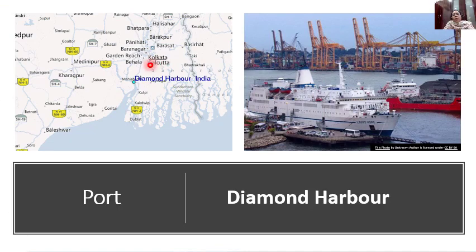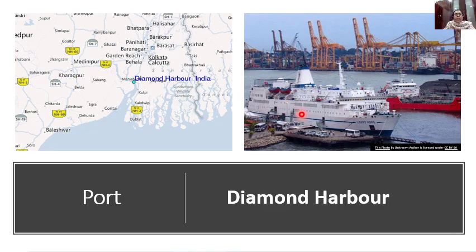Kolkata is located a little away from the seacoast — it is near the seacoast, not very far from it. It has an important port called Diamond Harbour. Ships bring goods from other countries and take goods to other countries. The name of the port is Diamond Harbour.